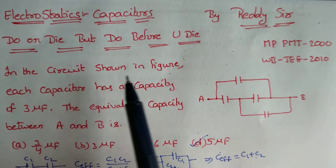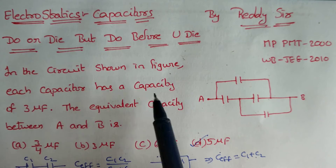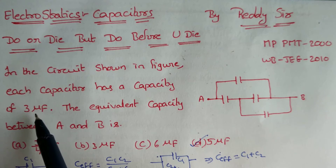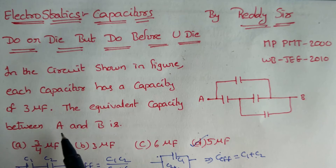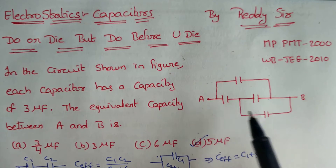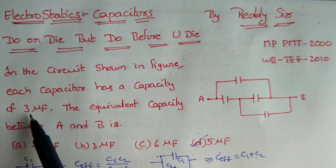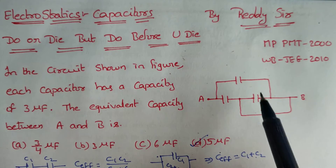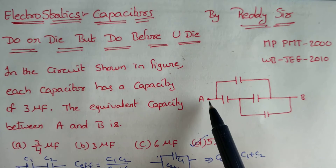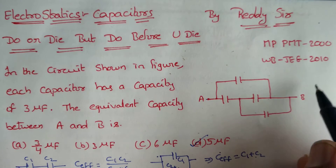In the circuit diagram shown in the figure, each capacitor has a capacity of 3μF. We need to find the equivalent capacitance between A and B.